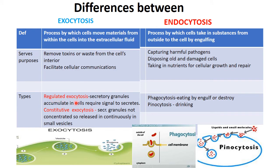In constitutive exocytosis, materials gradually accumulate and are continuously released in small vesicles without requiring a specific signal. A very good example of regulated exocytosis is the neurotransmitter acetylcholine.